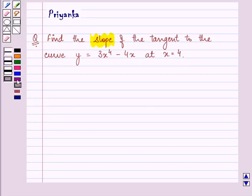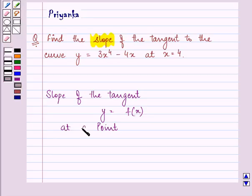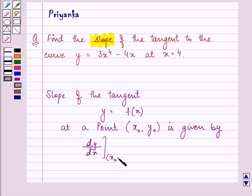we should be well versed that the slope of the tangent to the curve y equals f(x) at a point (x₀, y₀) is given by dy/dx at (x₀, y₀), which equals f'(x₀).